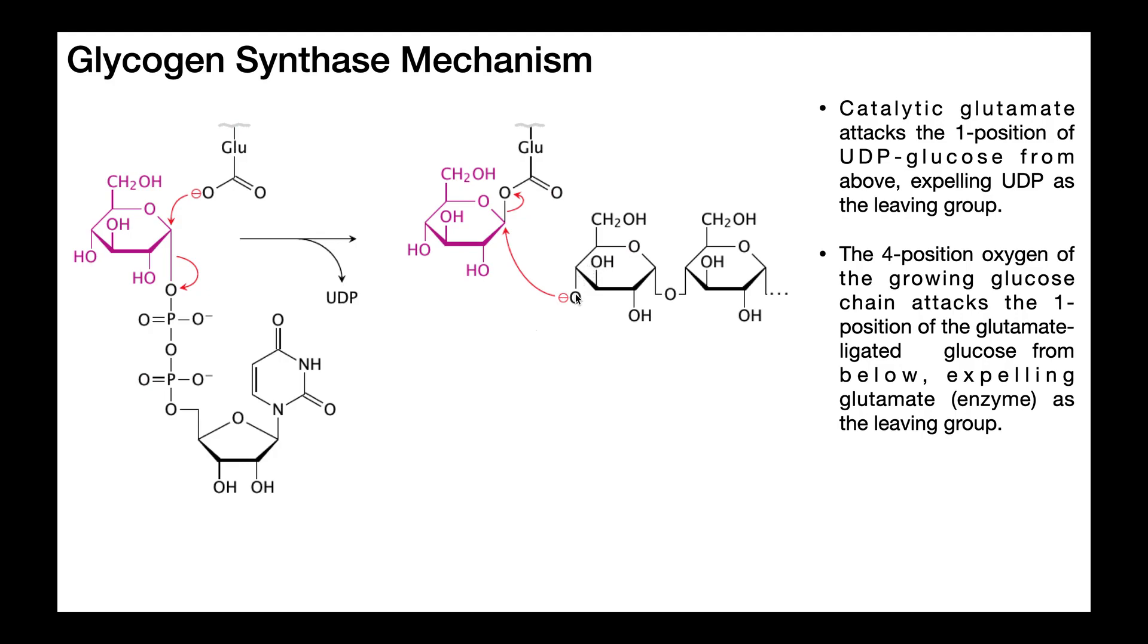its four position oxygen, once deprotonated, attacks this one position of this glucose from below, and it expels the glutamate residue of the enzyme as a leaving group. So now you've effectively lengthened this glycogen chain by one glucose unit.